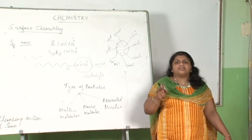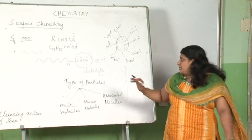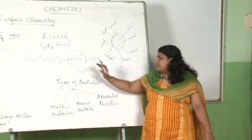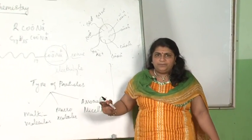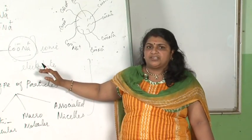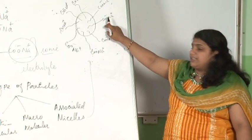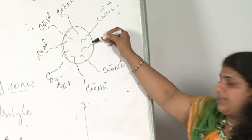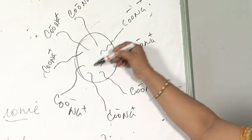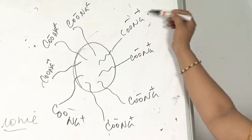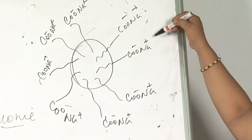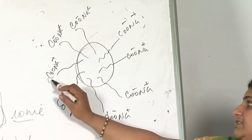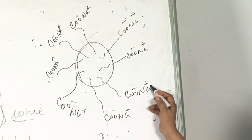Detergents are lauryl sulfates — they are salts of lauryl sulfate. When we put detergents and soaps in water at a particular concentration, micelle formation occurs where the organic parts aggregate together projected inside, and the ionic parts project out, creating a bigger molecule of colloidal dimension.